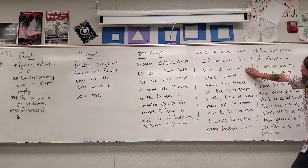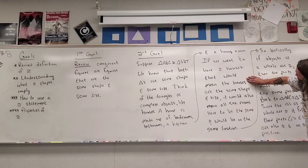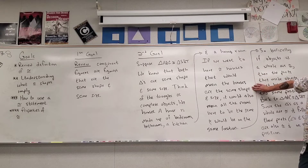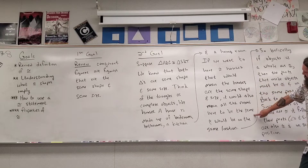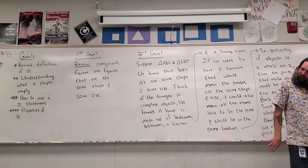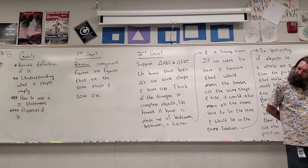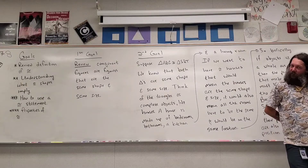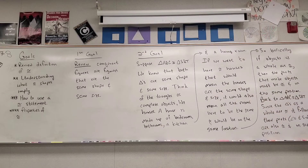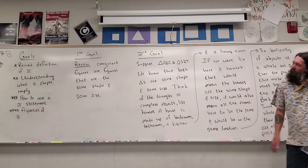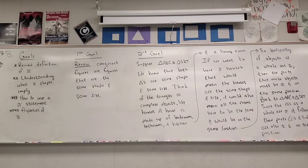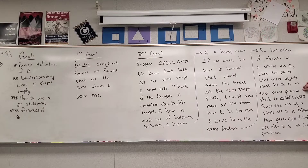If we were to have congruent houses, that would mean the houses are the same shape and size. It would also mean that all the rooms would have to be the same and in the same location. In order to have identical houses, not only does the outside have to be the same, but the inside has to be the same. So basically, if objects as a whole are congruent, then the parts that make the objects must be congruent and in the same position.